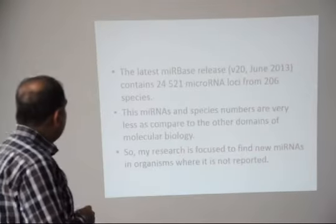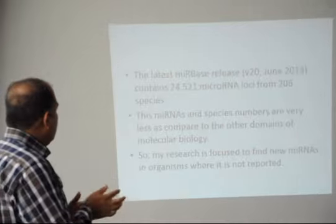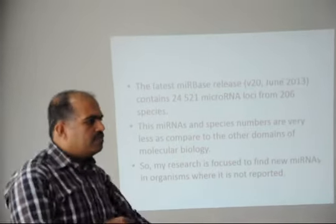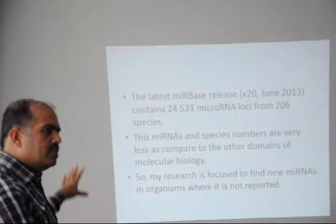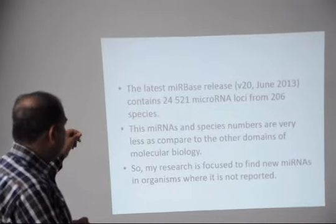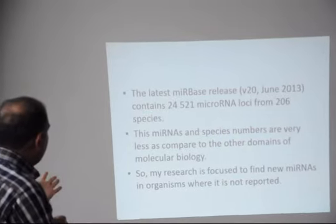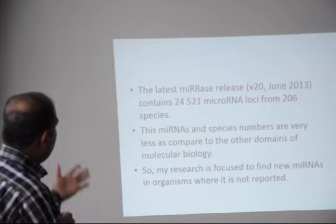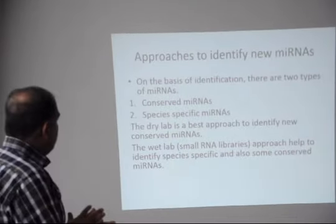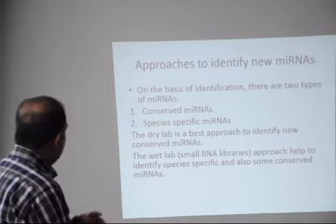The latest MIRBASE release — version 20, released June 2013 — contains 24,521 microRNAs from 206 species. Compared to the number of ESTs, proteins, and other molecular biology resources per organism, this number is very small, which motivates work to find microRNAs in organisms where they have not yet been reported. There are two types of microRNAs: conserved microRNAs present across different species, and species-specific microRNAs present in only one species.